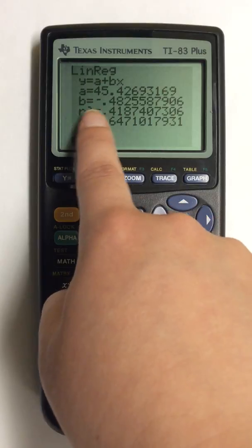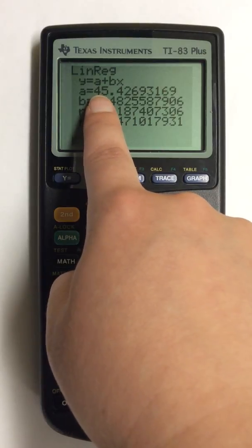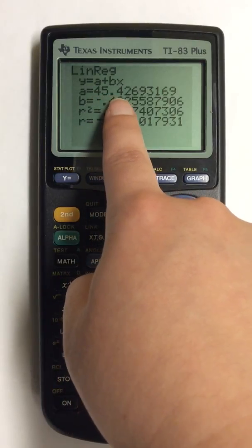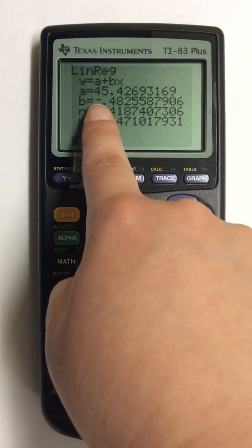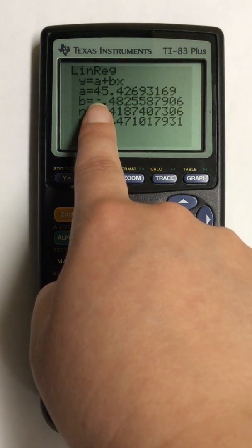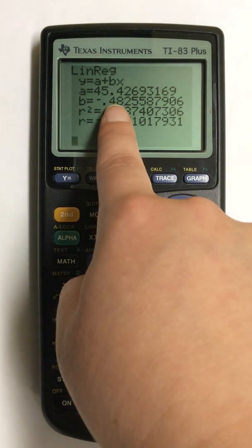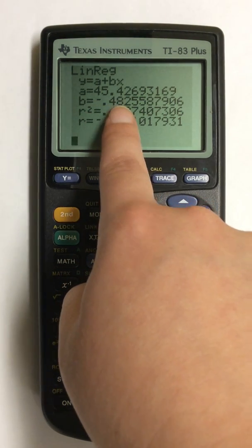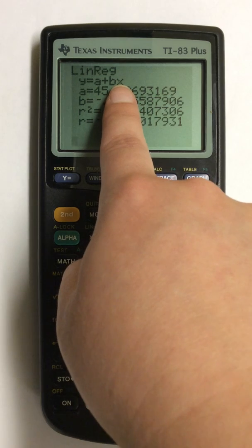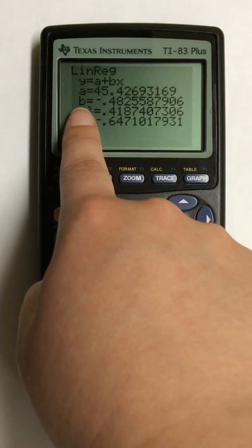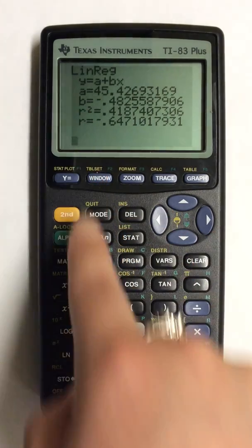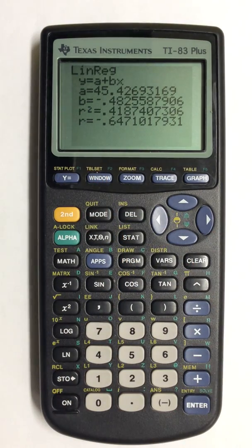So my line would look like 45.43 minus, because of the minus here, .48X. You have to make sure you have the X next to it. These two numbers are all you need to find your regression line.